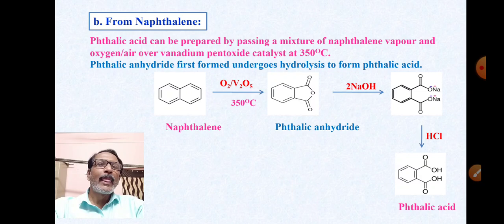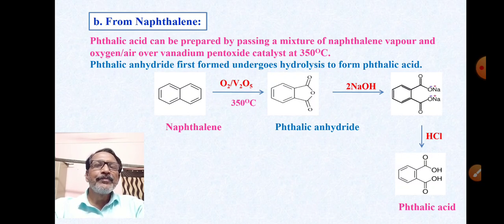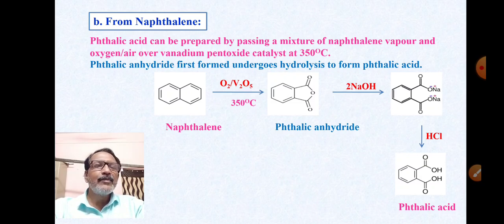In the preparation of phthalic acid from naphthalene there are three steps: first, formation of phthalic anhydride from naphthalene with air over vanadium pentoxide at 350°C; second, alkaline hydrolysis using NaOH gives disodium phthalate; third, reaction with hydrochloric acid gives phthalic acid.